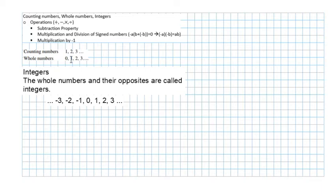Then, later on, you are introduced to the integers. The integers are the whole numbers and their opposites. So what's the opposite of a number? The opposite of a number is the negative of that number. The opposite of negative 5 is 5; the opposite of 11 is minus 11, and so on.